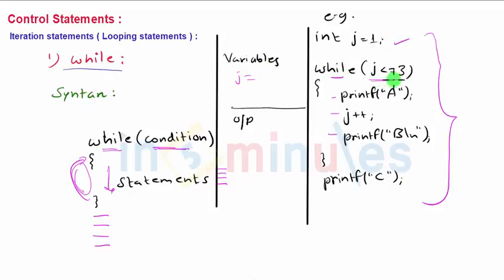Then the program reaches while. It checks the condition—that is true—so it executes printf A. Initially j is 1, printf A prints A, then j plus plus occurs, that is j increments to 2, then printf B occurs on the same line because there is no backslash n mentioned in the previous printf.